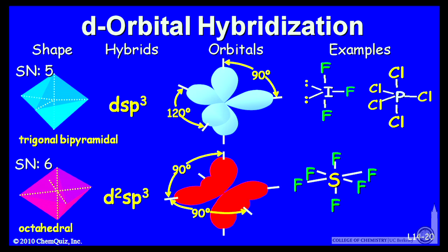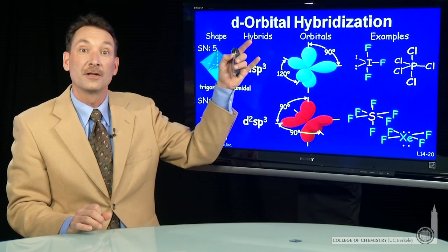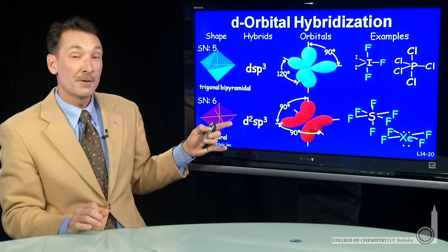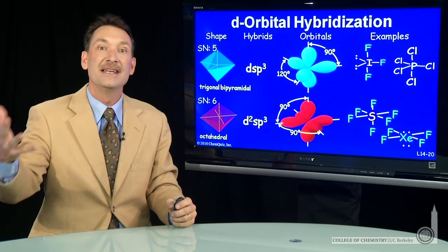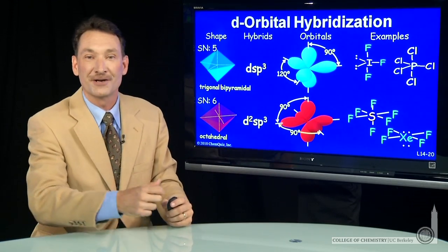Examples of this, sulfur hexafluoride and xenon tetrafluoride. So larger steric numbers can be accommodated by bringing in d orbitals when octets are expanded.